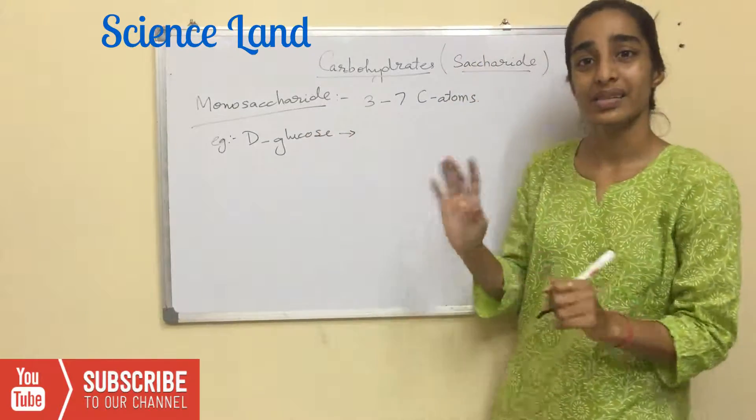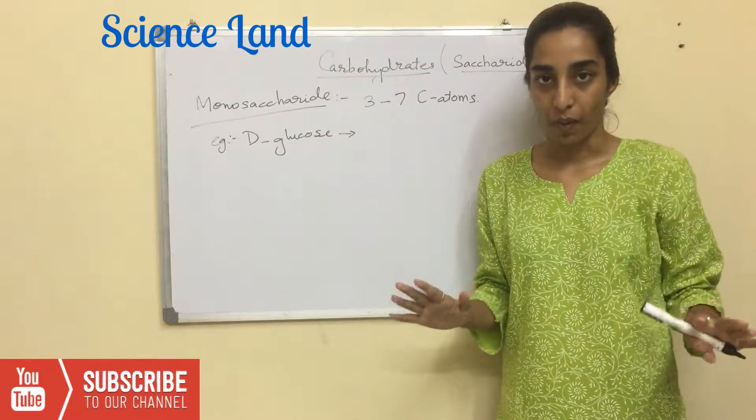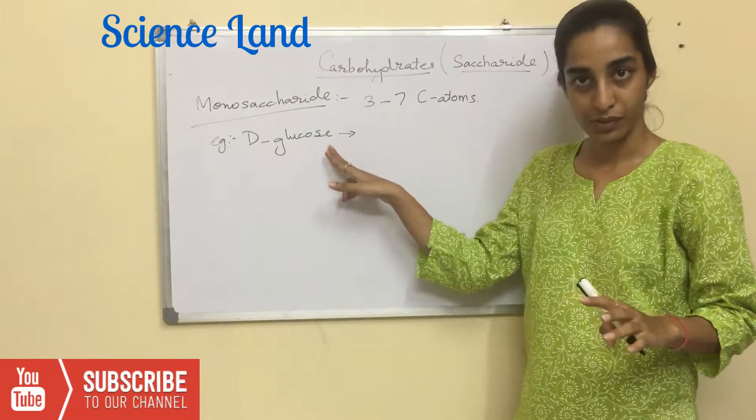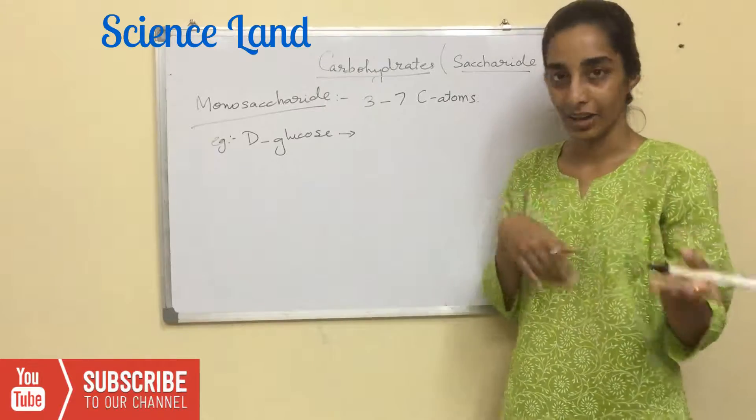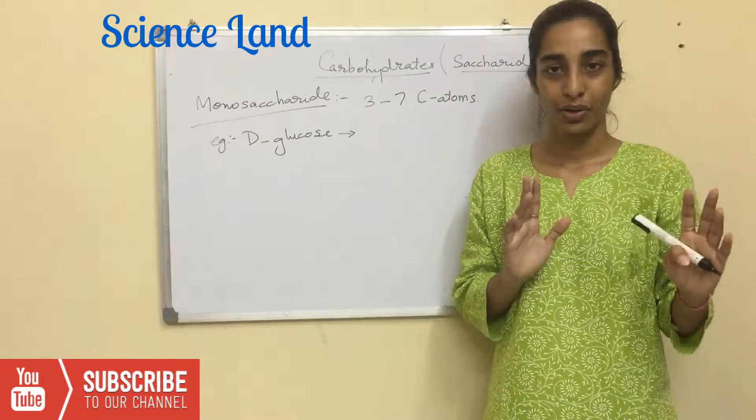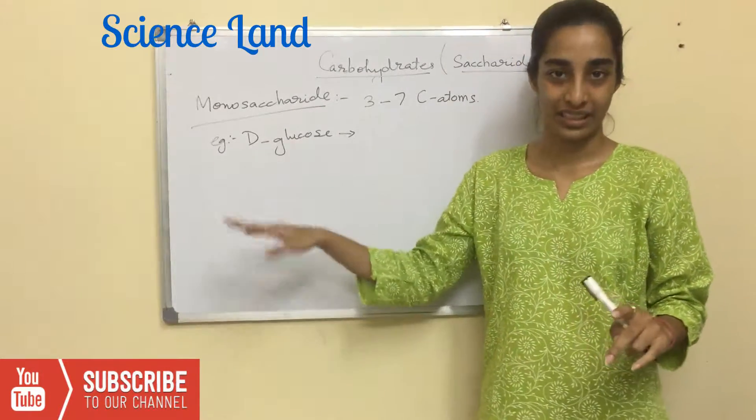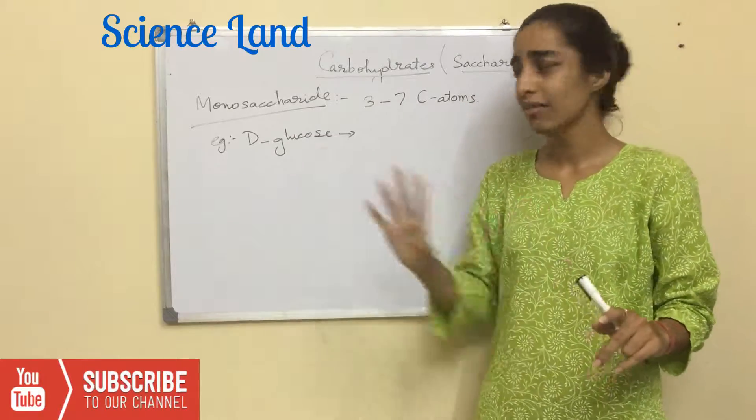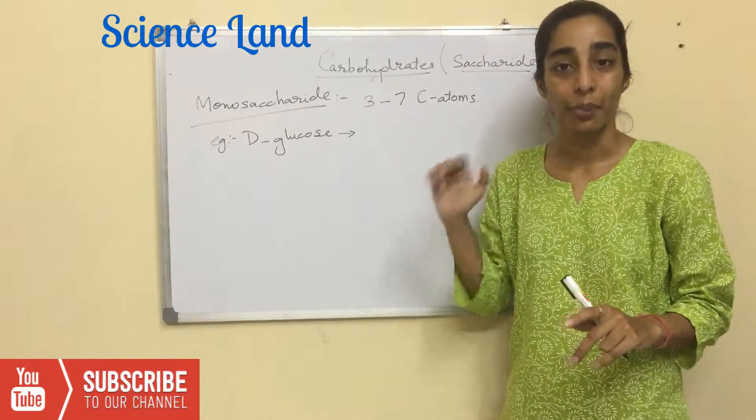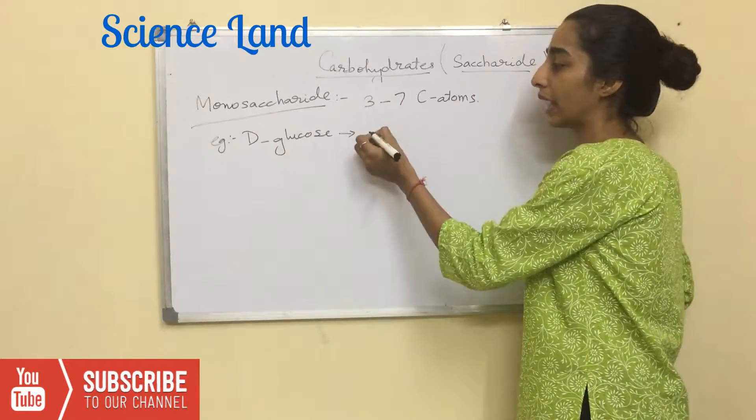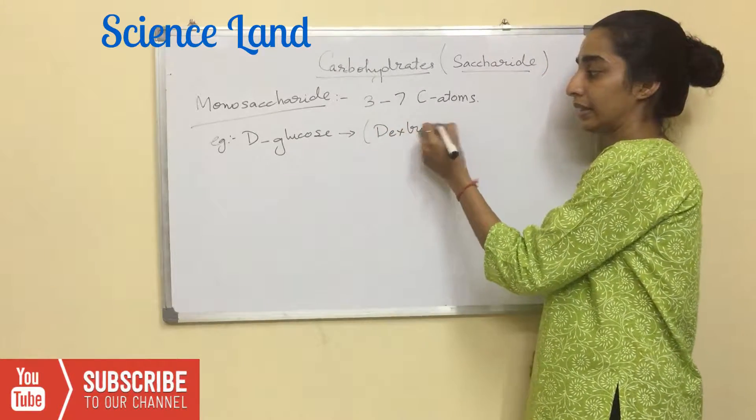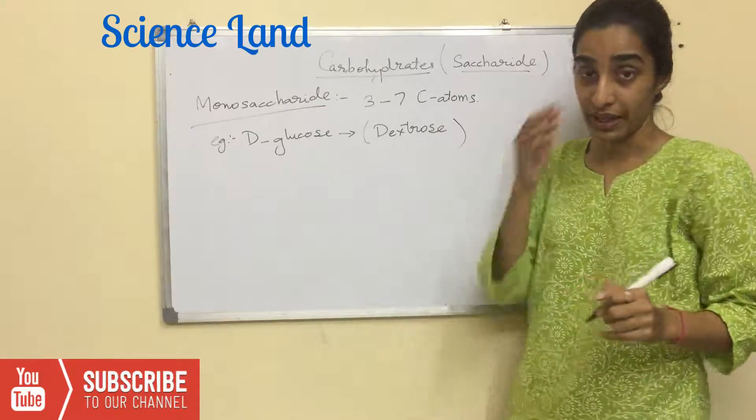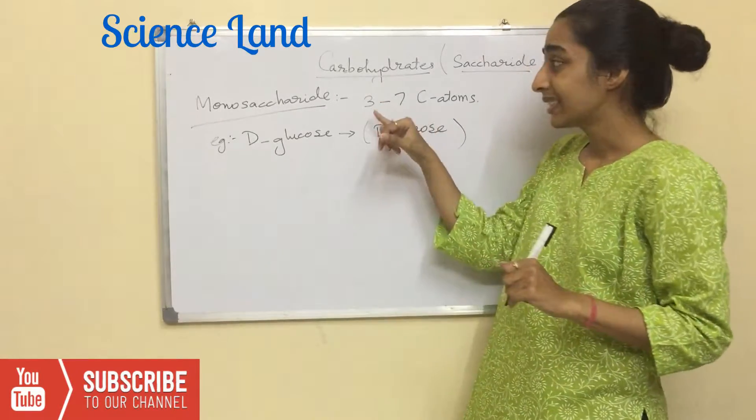This is the abundant form of glucose which is present in nature, not the other form which is L-glucose. I'll let you know later on what is D-glucose and L-glucose. For now, D-glucose is the abundant form. It is also known as dextrose.